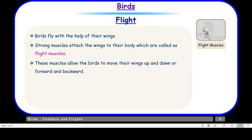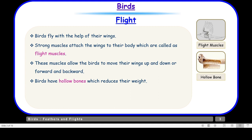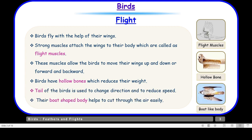If we talk about the bones in case of birds, birds have hollow bones — hollow means empty from inside. They have air-filled spaces that reduce the weight of the bird. The tail of the bird is used to change direction and to reduce speed, so when the bird is flying the tail helps in changing direction or reducing speed. The body is boat-shaped, also called a streamlined body — narrow from both ends but broad in the middle — and this shape helps them cut through the air easily.